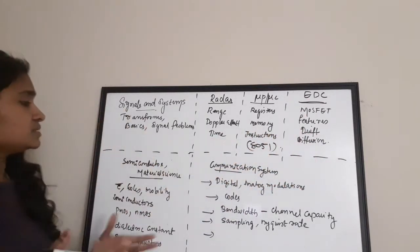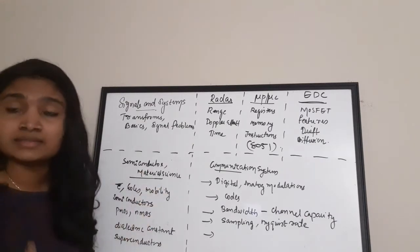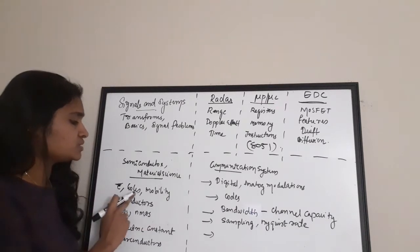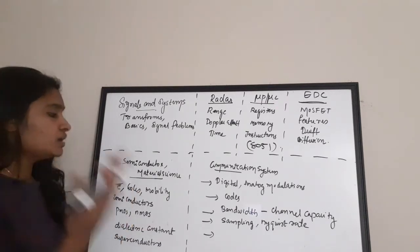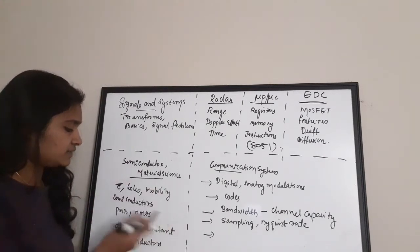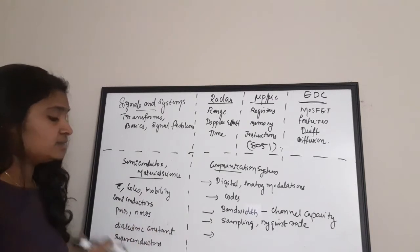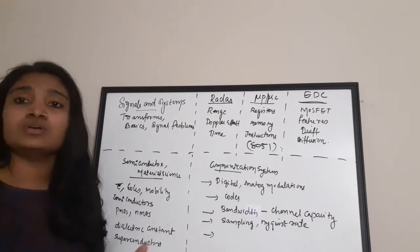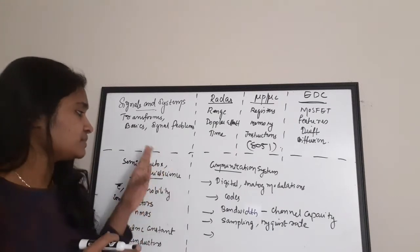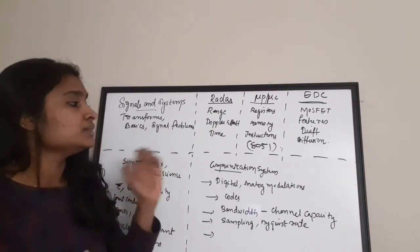Semiconductor Theory and Material Science is also very important. Concentrate on electrons and holes — their mobility and concentration. Study semiconductors, P-type and N-type materials, dielectric constant, and superconductors. Several questions appear from this subject in the question papers.